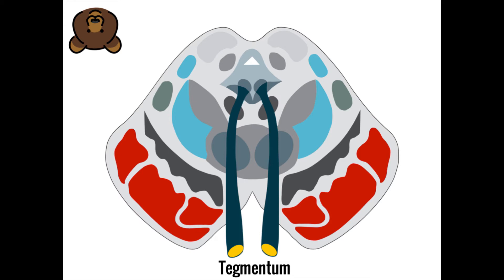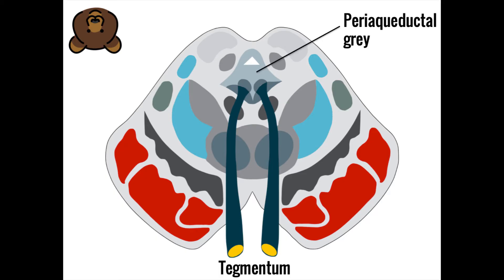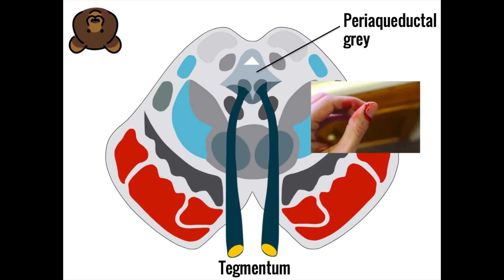The tegmentum contains much of the reticular formation, as well as sensory fibers traveling from the spinal cord to the thalamus. The area immediately surrounding the cerebral aqueduct is known as the periaqueductal gray, and contains a collection of cell bodies that plays an important part in the perception and regulation of pain.